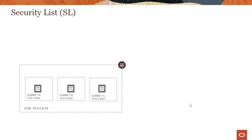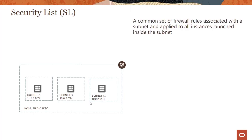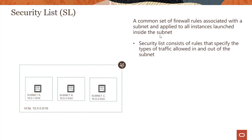In the previous modules, we have already looked at security lists. When we were running a few demos, we actually went through these and opened certain ports for some of the subnets and instances. So what is a security list? A security list is a common set of firewall rules associated with a subnet and applied to all instances launched inside the subnet. It consists of rules that specify the types of traffic allowed in and out of the subnet.